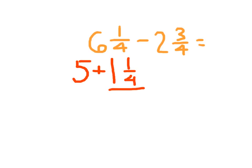One whole is worth how many-fourths? Four. And if I put it together with the one-fourth that I have, I have five-fourths. So really, this is five plus five-fourths, which could be written as five and five-fourths.